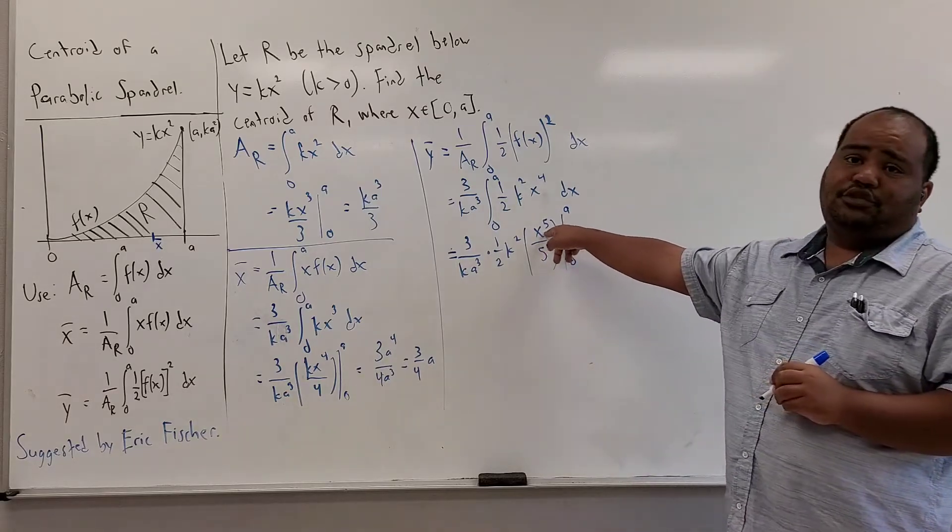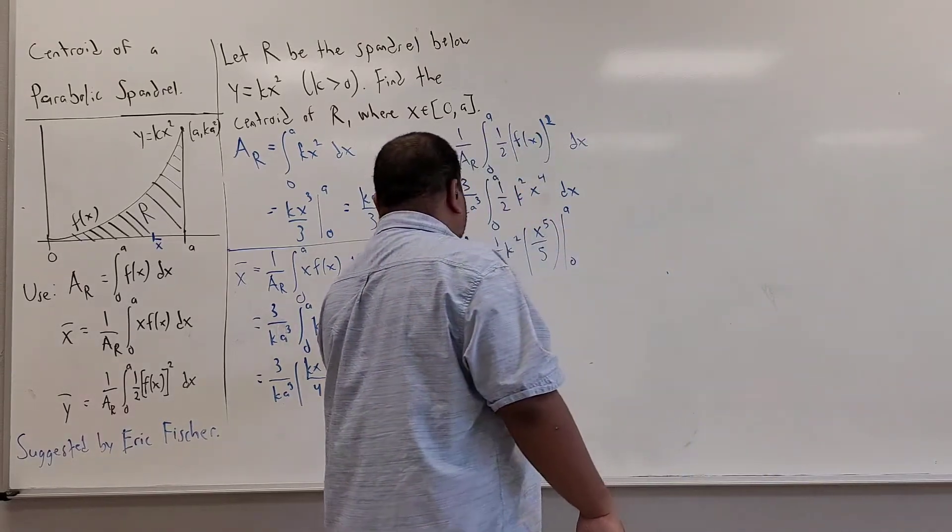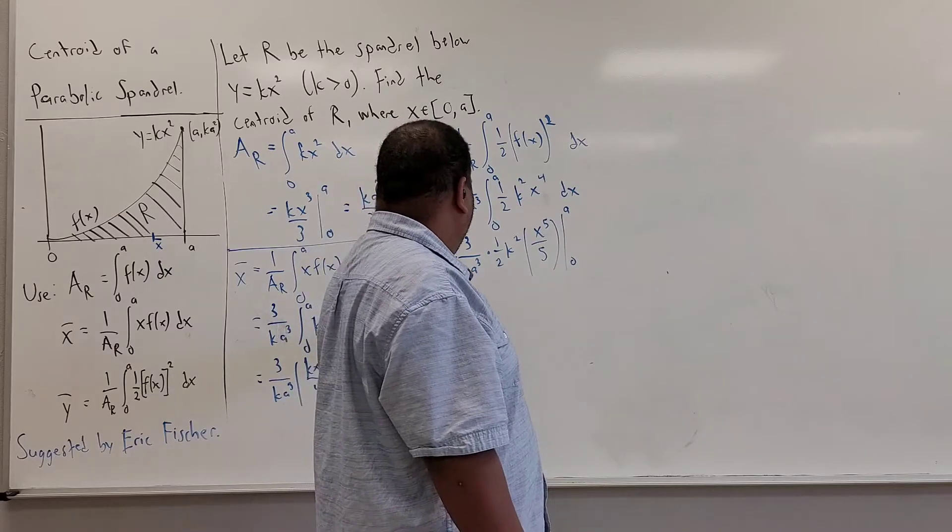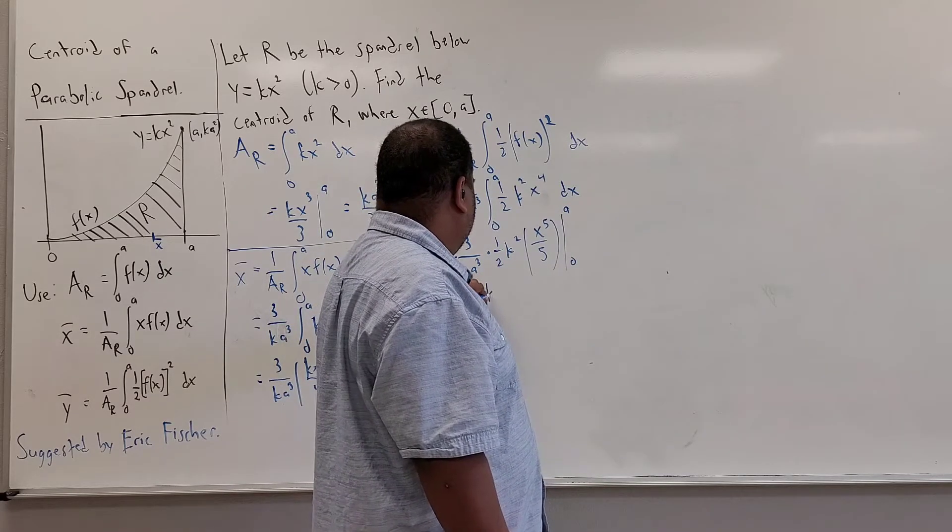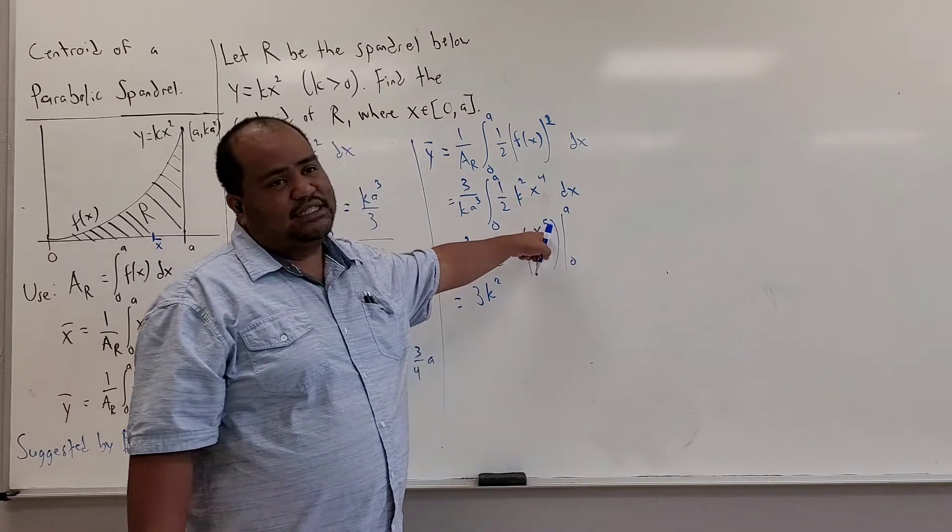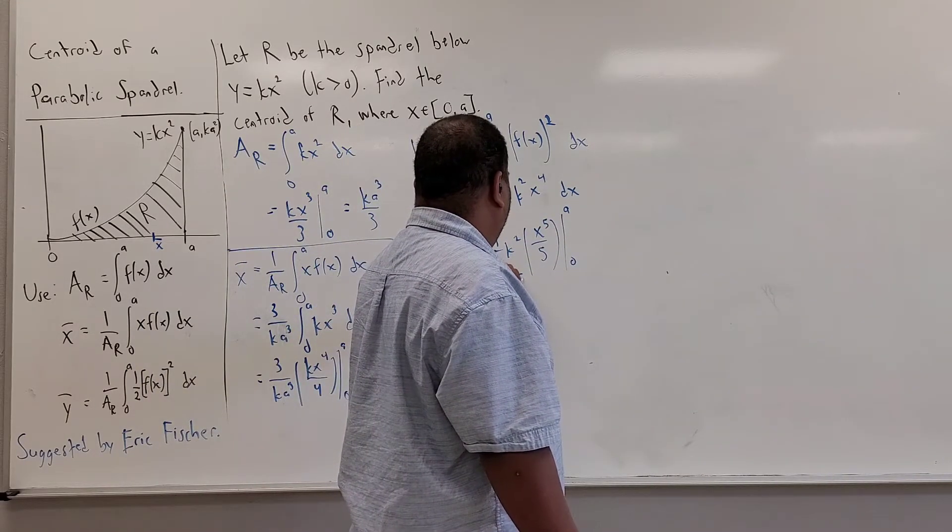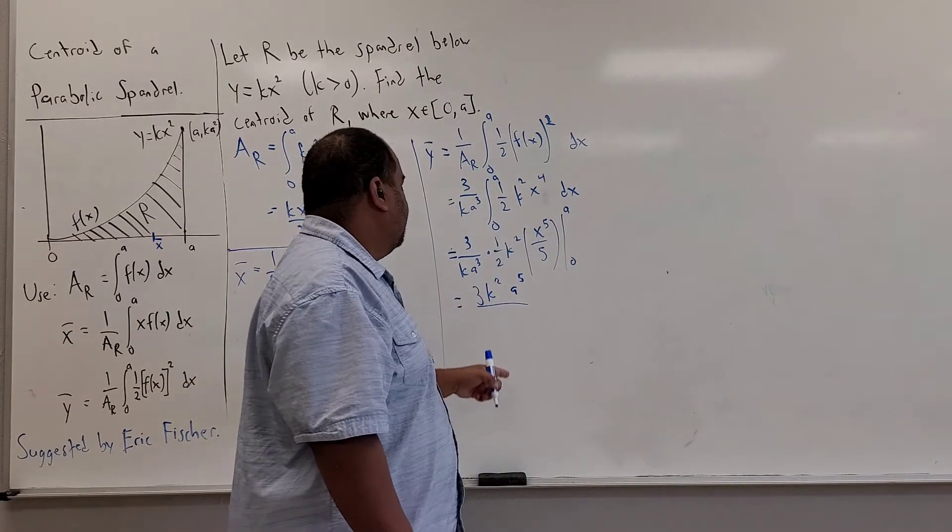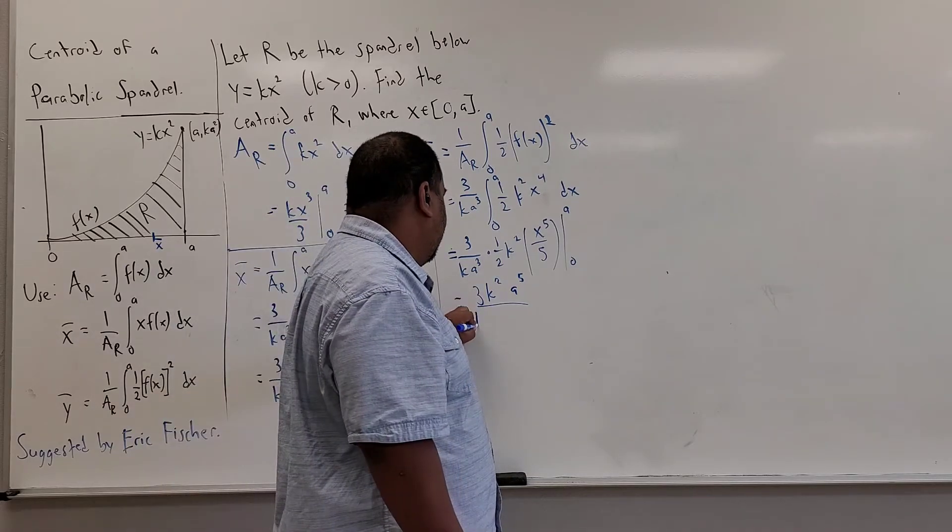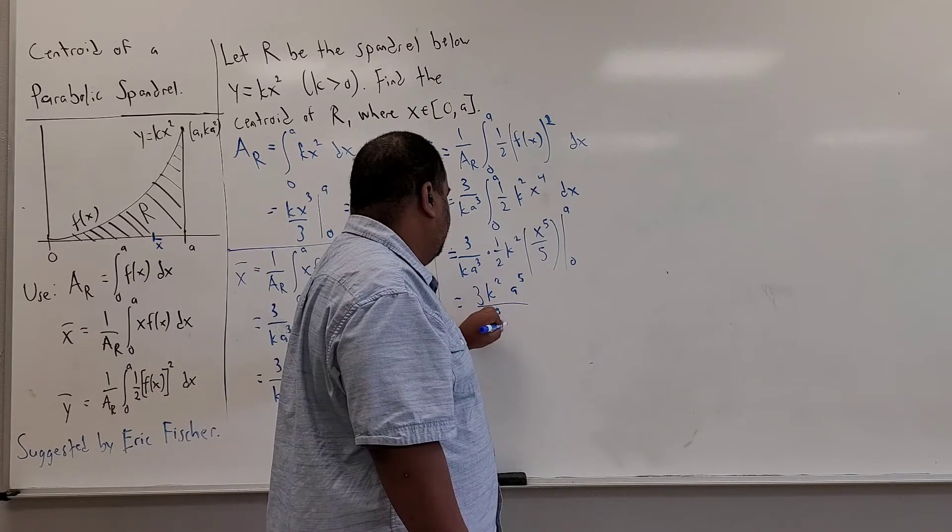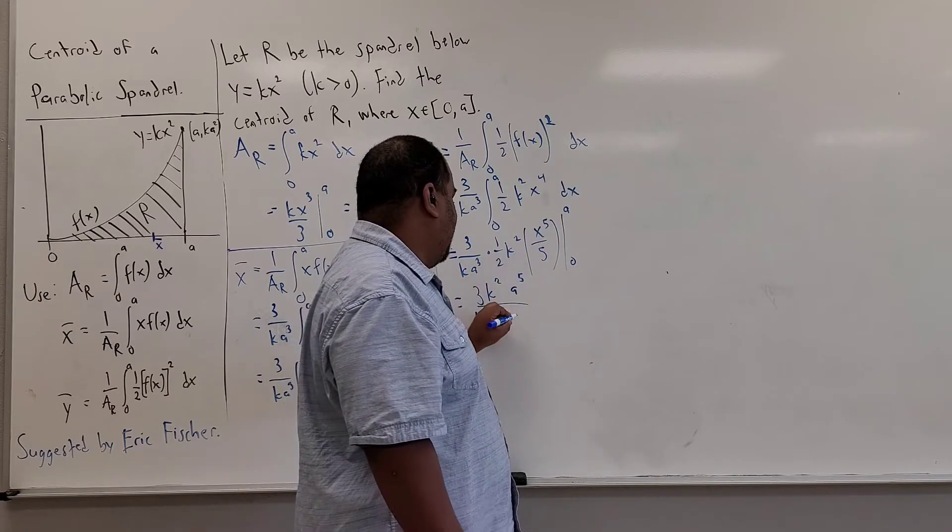And again, it vanishes at 0, so we don't have to worry about that. So, combining everything together, we have 3k squared, when I evaluate this at a, I get a to the fifth over 5. And I'll incorporate the 5 down here in the denominator, so I'll have k a cubed times 2 times 5, that's 10.